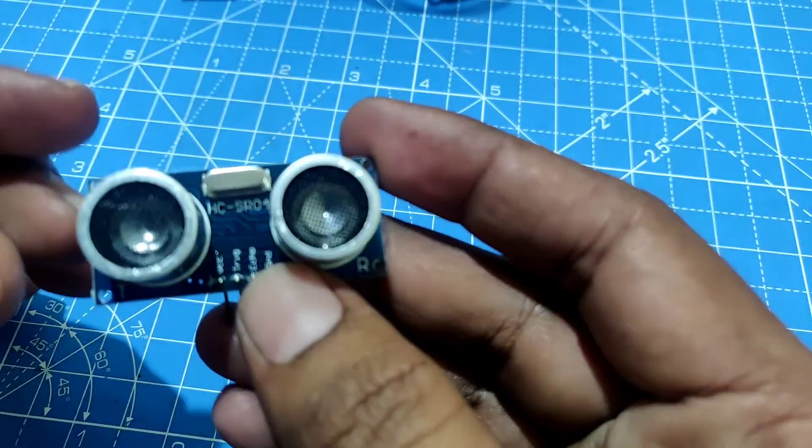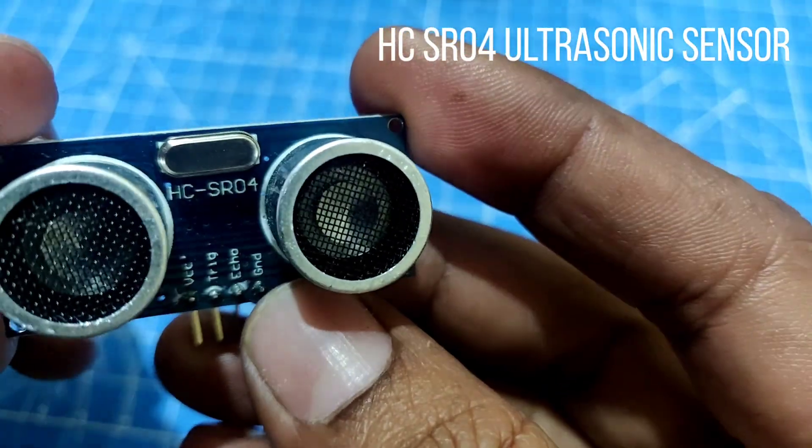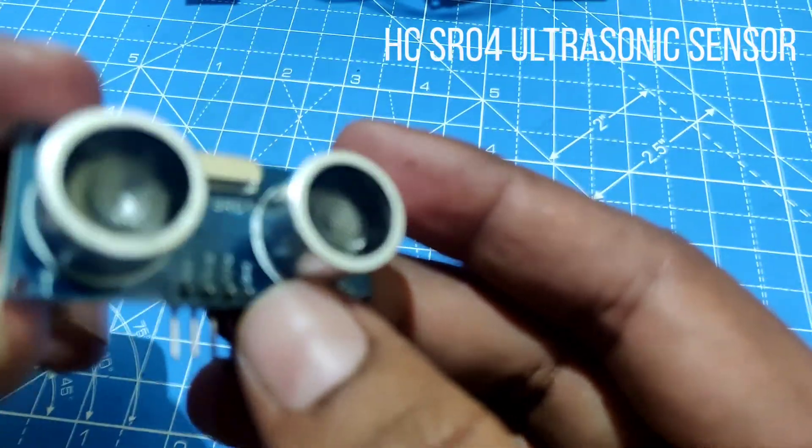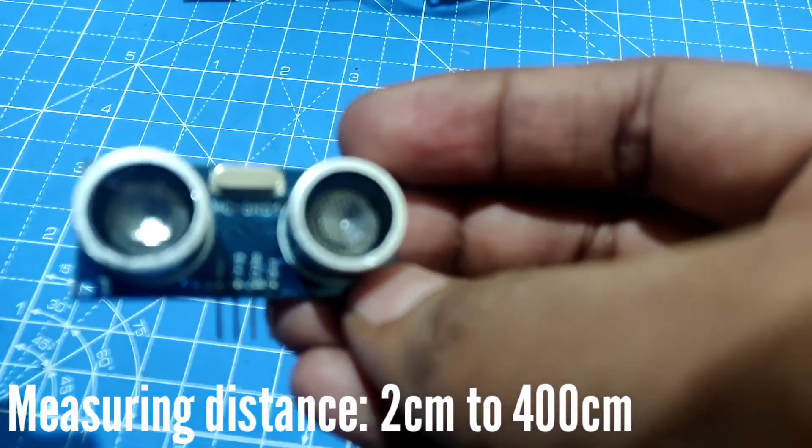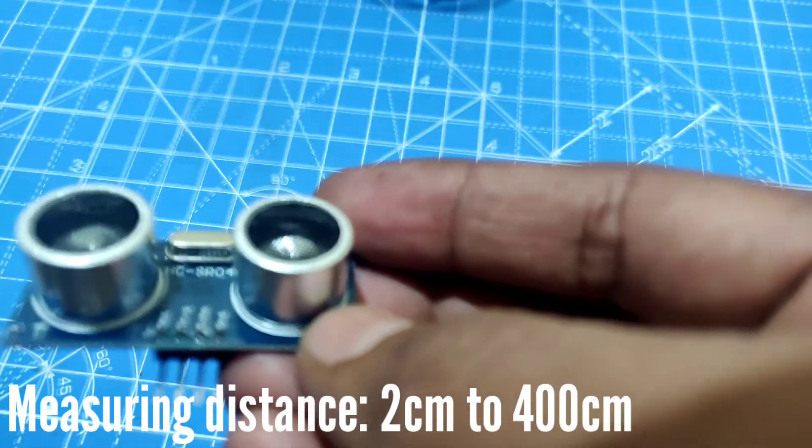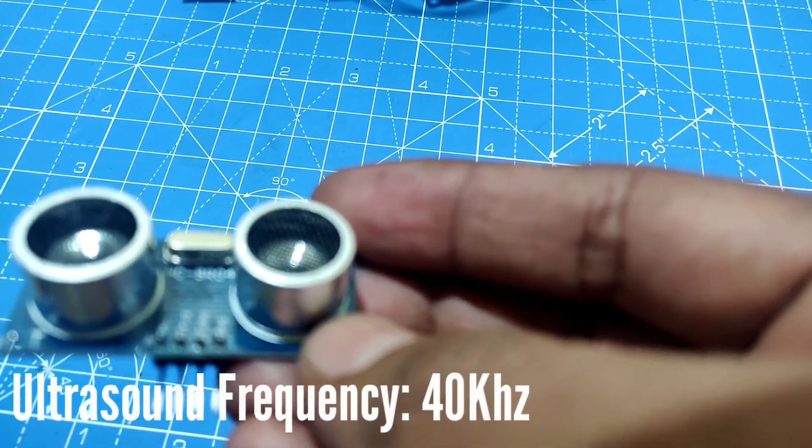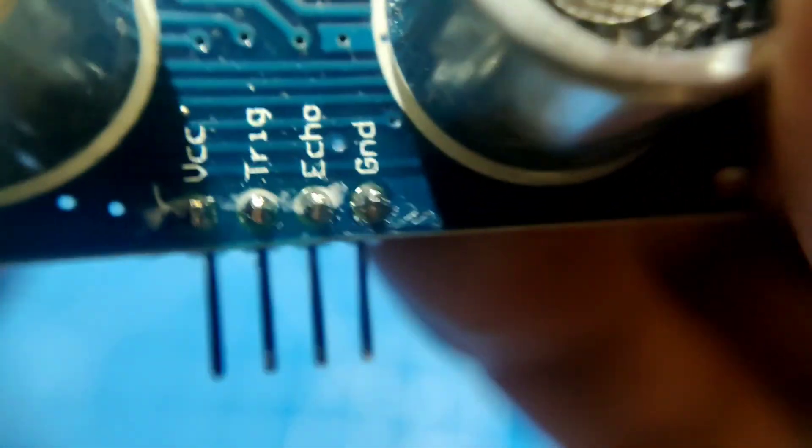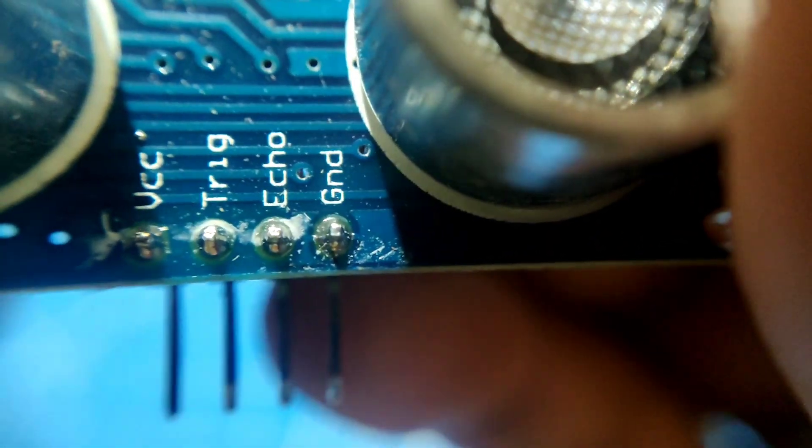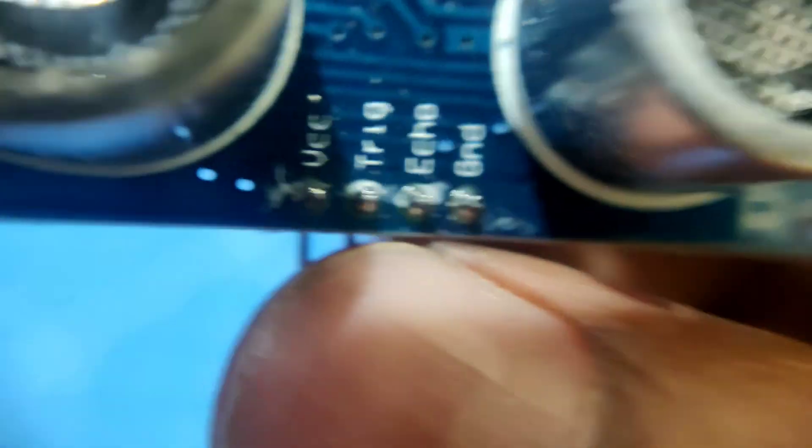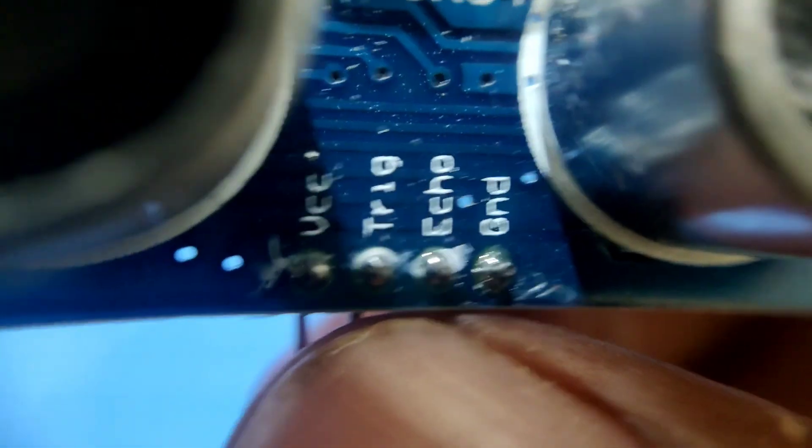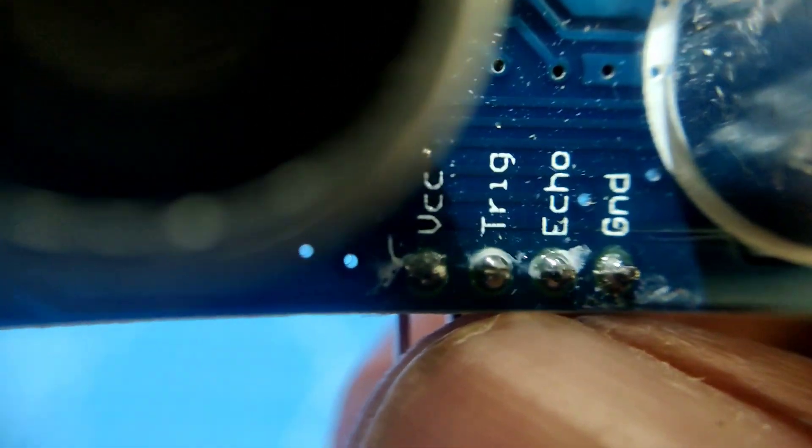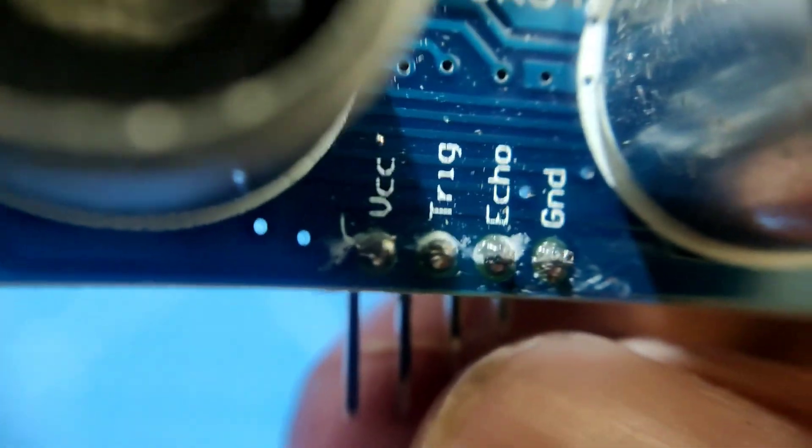Let's understand this HCSR04 ultrasonic sensor. This can measure the distance between 2 cm to 400 cm. It emits ultrasound at a frequency of 40 kHz into the air. It has 4 pins. You can see here VCC and GND should be connected to 5V supply. This trigger pin is an input pin. We need to keep this pin high for 10 microseconds to initiate the sound and this echo, it is an output pin.